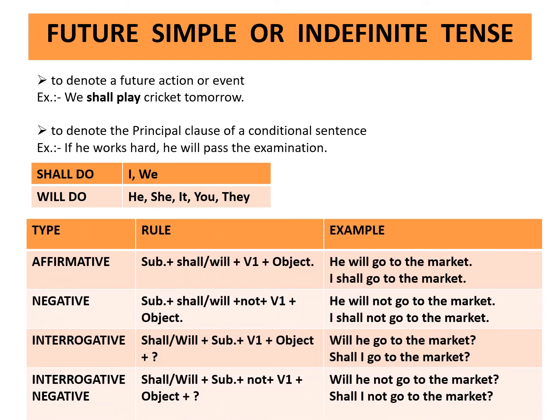Affirmative rule: subject plus shall or will plus first form of the verb plus object. Example: He will go to the market. I shall go to the market. Negative rule: subject plus shall or will plus not plus first form of the verb plus object. Example: He will not go to the market. I shall not go to the market. Interrogative rule: shall or will plus subject plus first form of the verb plus object plus question mark. Example: Will he go to the market? Shall I go to the market?